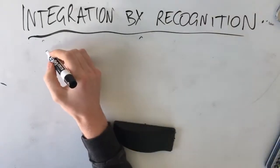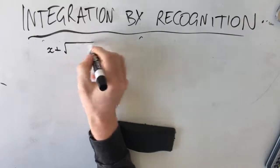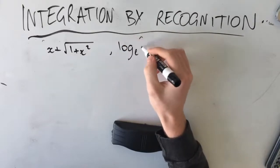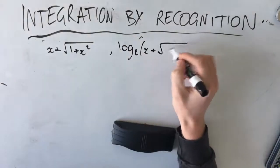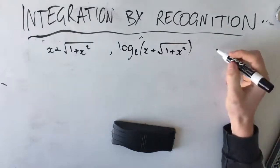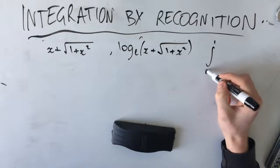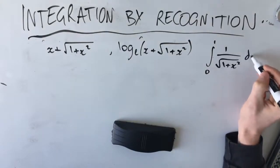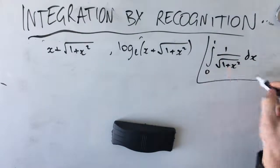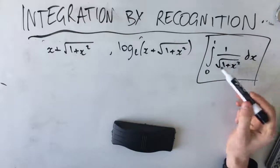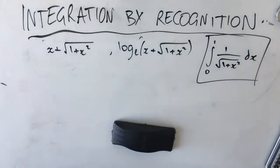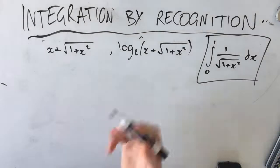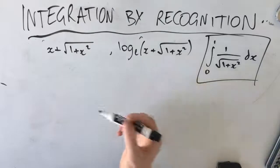The question asks us to find the derivative of x plus root(1 + x²), and the derivative of log_e(x + root(1 + x²)), and hence evaluate the definite integral from 0 to 1 of 1 over root(1 + x²) dx. Again, as a methods student we can't evaluate this directly, so we have to find a way to make it easier. The question asks us to derive these two expressions first.